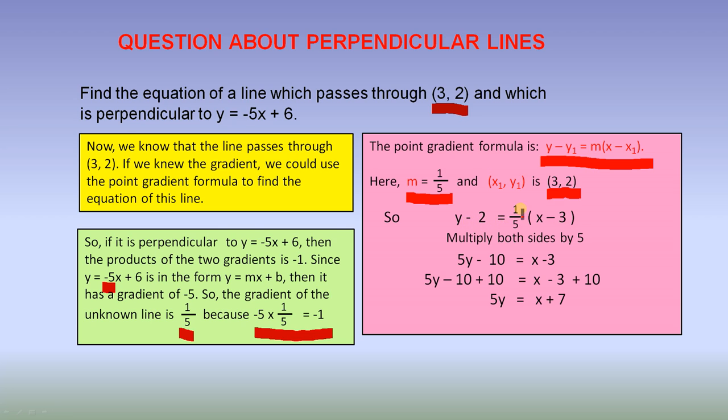y - 2 = 1/5(x - 3). We multiply both sides by 5 to remove this fraction. That gives us 5y - 10 = x - 3. We add 10 to both sides. 5y - 10 + 10 = x - 3 + 10. So, 5y = x + 7. That is the equation of the unknown line.